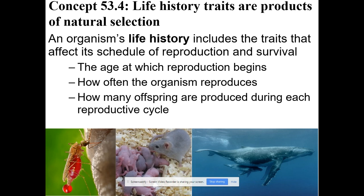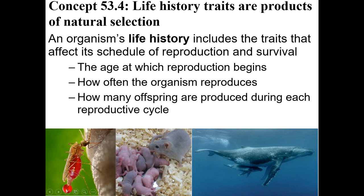We're looking at life history traits today, something called R selection versus K selection. The extreme examples would be a whale compared to a mosquito, with the mouse being somewhere in the middle. We're looking at how long it takes to grow up and how many babies you make once you are grown up.